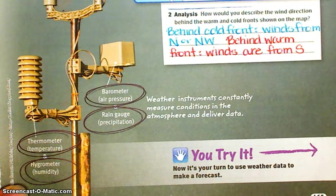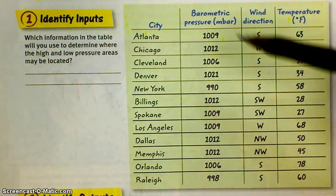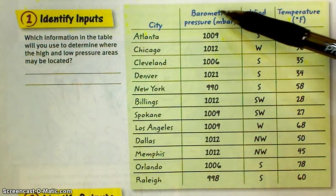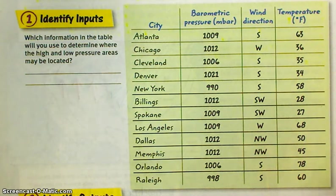Join me on the next couple of pages, please. I'm now on page 466, and I'm looking at a list of cities and some information about them. I have barometric pressure, I have wind direction, and I have temperature. Which information in the table will you use to determine where the high and low pressure areas may be located?